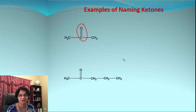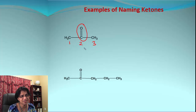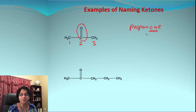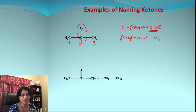In this example we have two alkyl groups and the ketone functional group. The longest chain containing the ketone has three carbons — that's propane. Whether we number from left or right, the carbonyl still lands on position two. Since it's a ketone, we replace 'e' with 'one,' giving propan-2-one. We can also write this as 2-propanone.